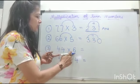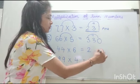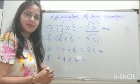Let's follow the same steps. 44 times 6: 4 times 6 is 24. Add 2 plus 4, that's 6. So this is your answer, 264.